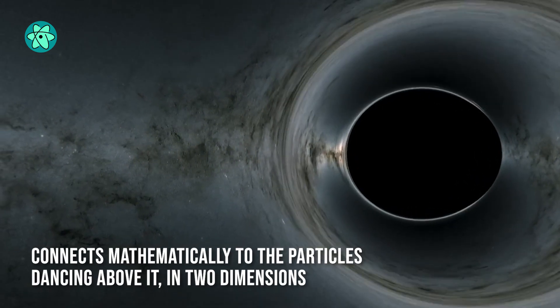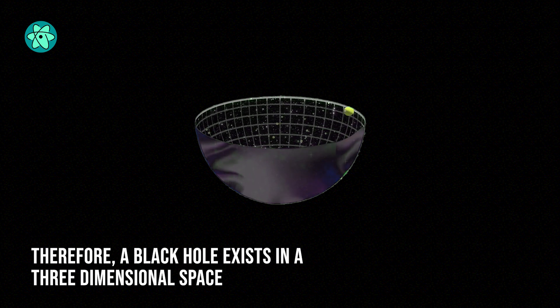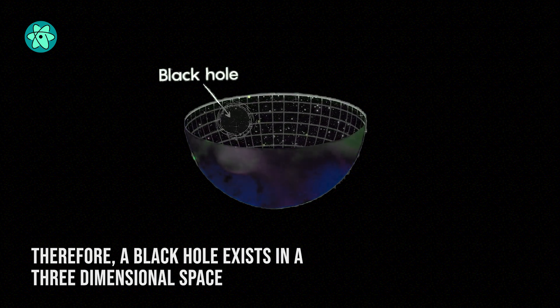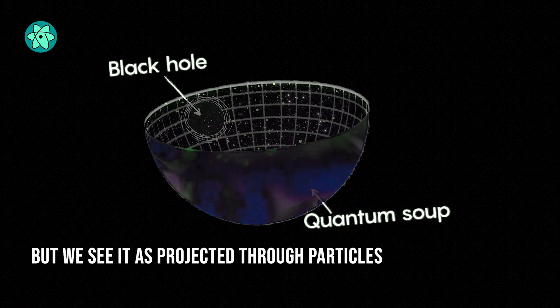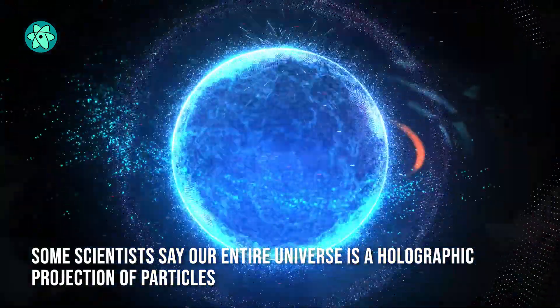The gravity of the black hole, which exists in three dimensions, connects mathematically to the particles dancing above it in two dimensions. Therefore, a black hole exists in a three-dimensional space, but we see it as projected through particles.